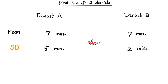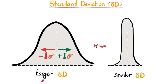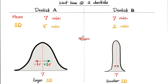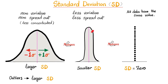Let's measure the wait time at two dental offices — dentist A and dentist B. The mean waiting time is the same, but the standard deviation is different: five minutes for dentist A compared to two minutes for dentist B. Dentist A has a larger standard deviation whereas dentist B has a smaller one. When the standard deviation is larger, the spread is bigger; when the standard deviation is smaller, the spread or variation is smaller. So dentist A has more spread, dentist B has less spread.